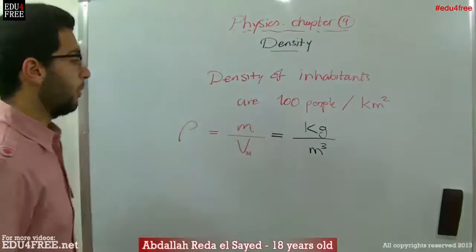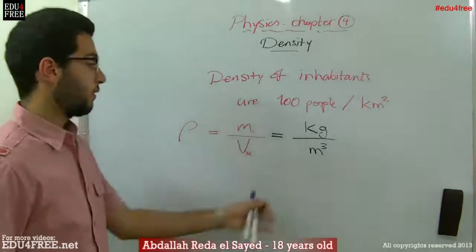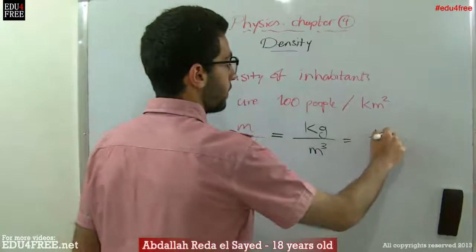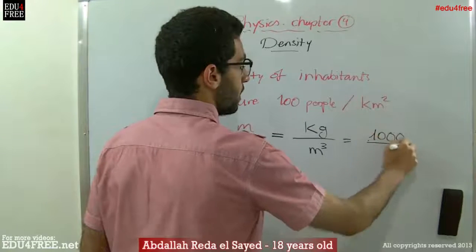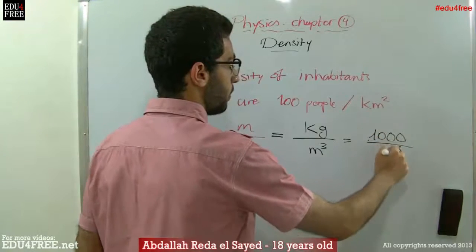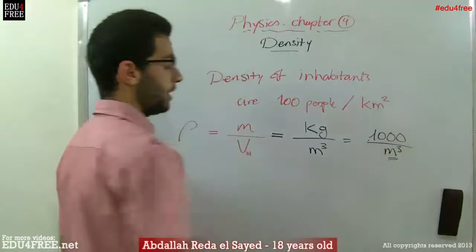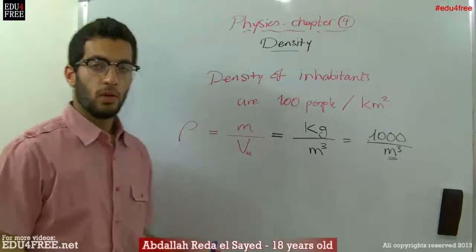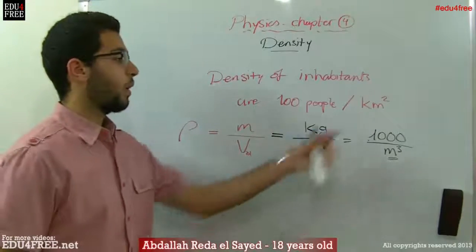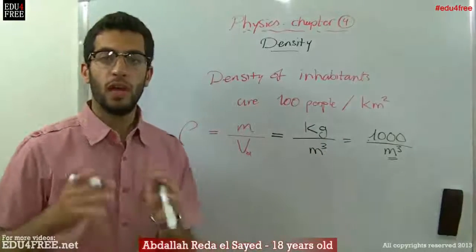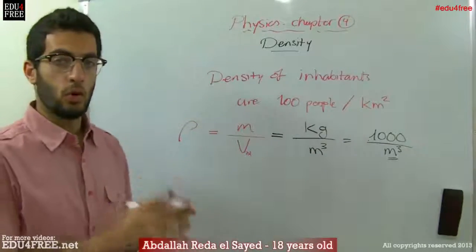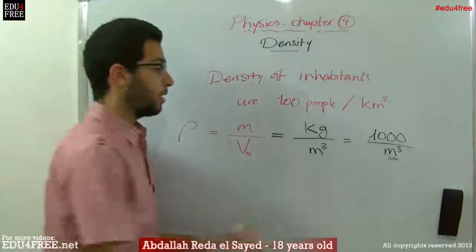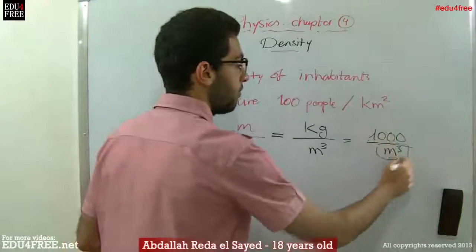For example, we have water. The density of water is 1000 kilograms per cubic meter. This means that every cubic meter of water weighs 1000 kilograms, or if we have 1000 kilograms of pure water, this would give us a volume of 1 cubic meter.